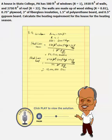For the wall heat loss, we need to calculate the composite R-value, because we are not given the R-value straight away, though we are given the area. So let's calculate the composite R-value.